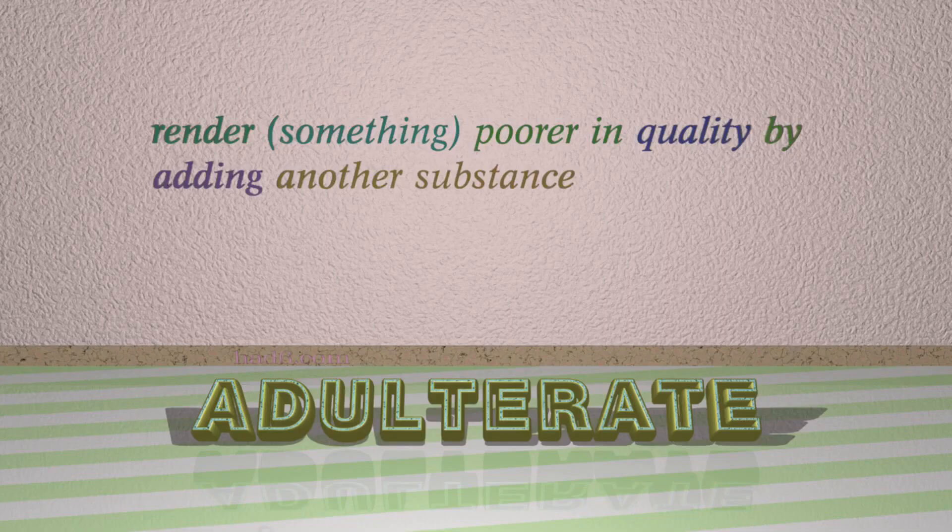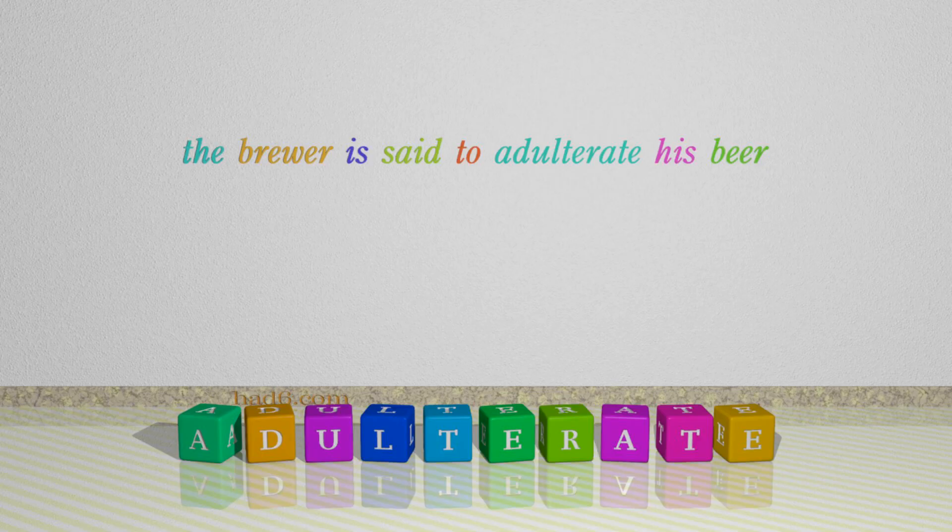Number 4: Adulterate. Which means: render something poorer in quality by adding another substance. For example: The brewer is said to adulterate his beer.